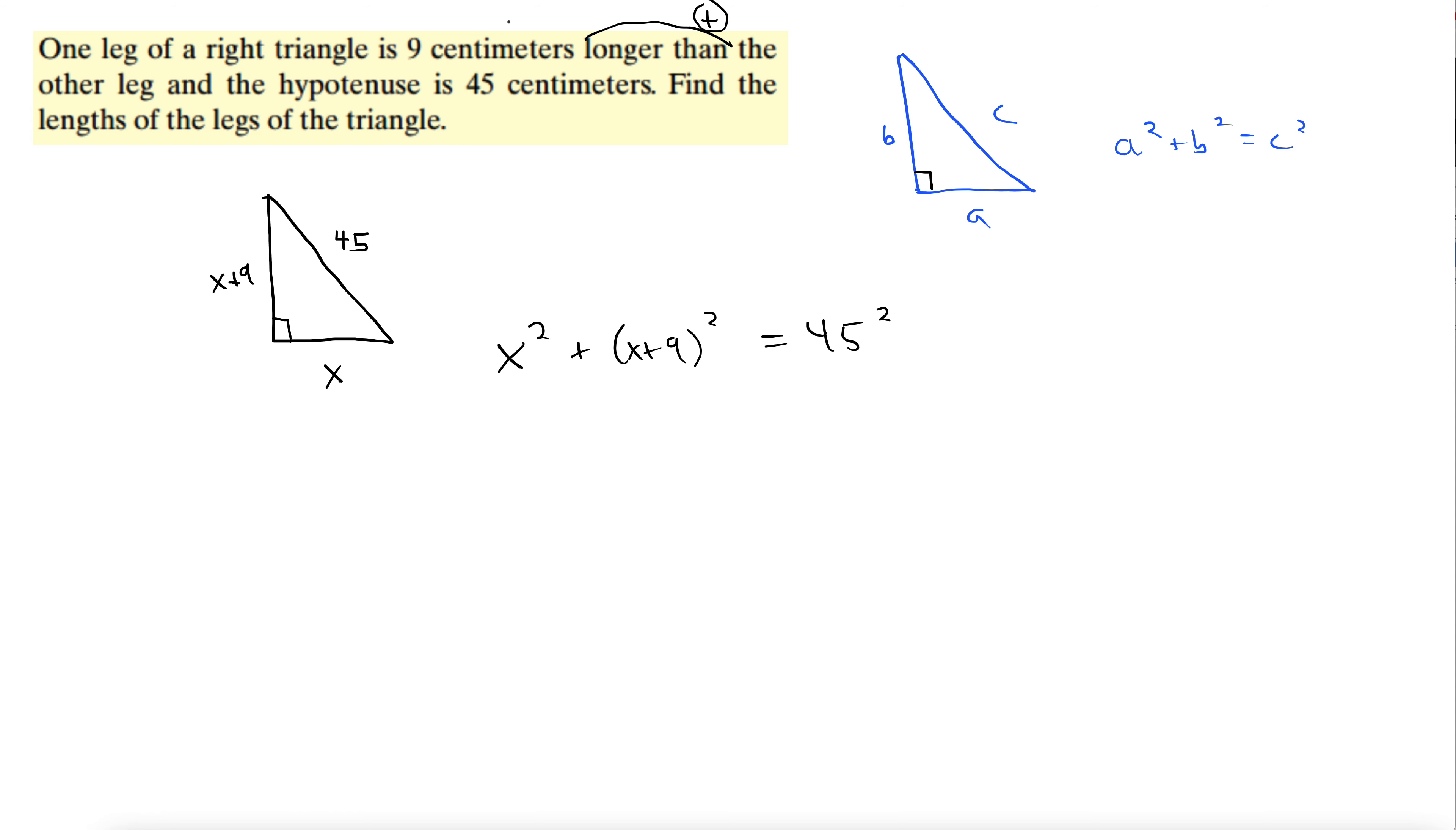Let's expand this x plus 9 squared out using a plus b squared is a squared plus 2ab plus b squared. So we have x squared plus x squared plus 18x plus 81 equals, let's see, 45 squared, 2025.